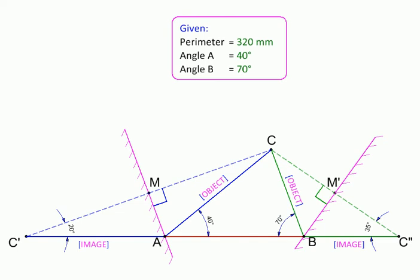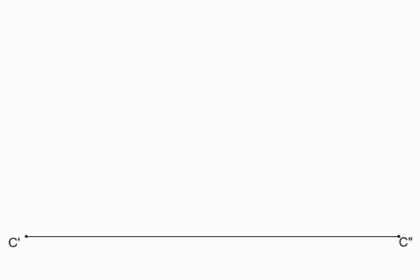We will start with the perimeter, C dash C double dash equal to 320 millimeters. We will erect angle 35 degrees, which is half of the given angle 70 degrees, from one end, and from the other we will erect half of 40 degrees equal to 20 degrees. Wherever the two lines meet is our vertex C.